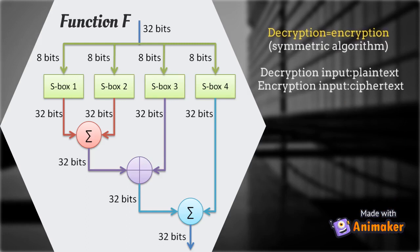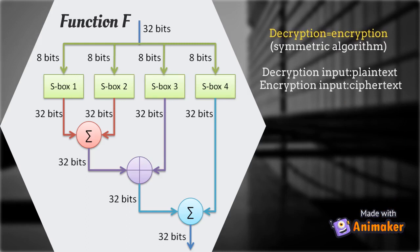The F function takes a 32-bit input and divides it into 4 bytes, which are then used as indices in an S-box array. To create the output, the lookup results are added and XOR'd together.